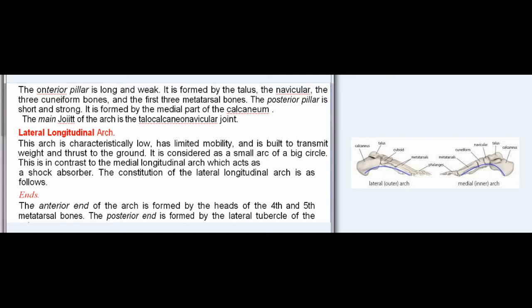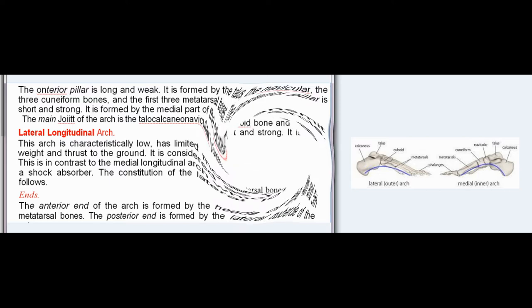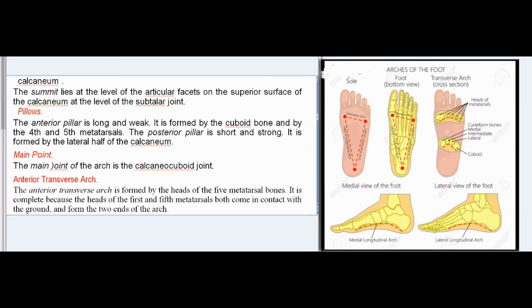Lateral longitudinal arch: This arch is characteristically low, has limited mobility, and is built to transmit weight and thrust to the ground. It is considered as a small arc of a big circle. This is in contrast to the medial longitudinal arch which acts as a shock absorber. The anterior end of the arch is formed by the heads of the 4th and 5th metatarsal bones. The posterior end is formed by the lateral tubercle of the calcaneum. The summit lies at the level of the articular facets on the superior surface of the calcaneum, at the level of the subtalar joint.